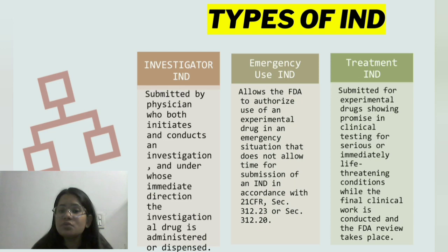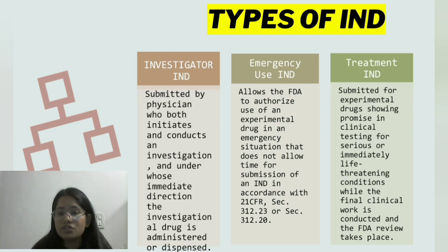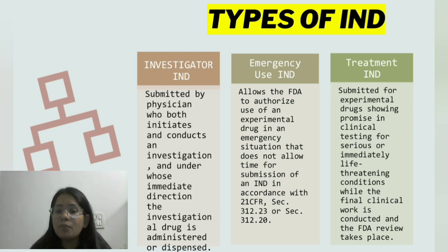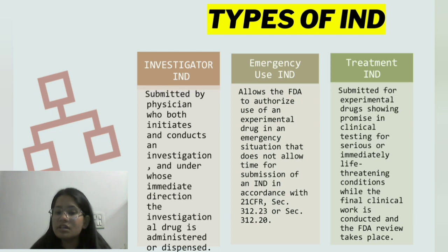In Emergency Use IND, it allows the FDA to authorize use of an experimental drug in an emergency situation that does not allow time for submission of an IND in accordance with 21 CFR Section 312.23 or Section 312.20. Treatment IND is submitted for experimental drugs showing promise in clinical testing for serious or immediately life-threatening conditions while the final clinical work is conducted and the FDA review takes place.